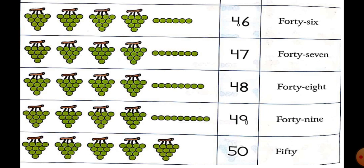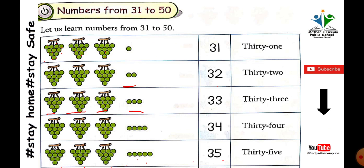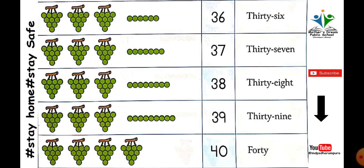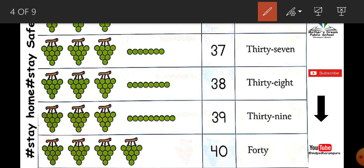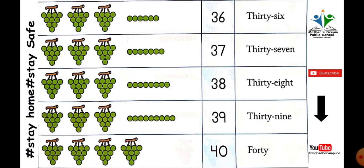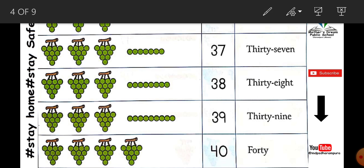Next is thirty-six. How many groups of grapes? Three groups, and six extra. Three groups make thirty, plus six — thirty-six. How many is that? Thirty-six. Next, three groups of grapes — ten, ten, ten — that's thirty. And seven extra. Thirty-seven. T-H-I-R-T-Y. Thirty-seven.